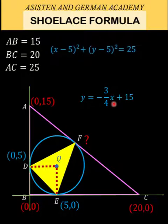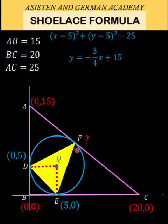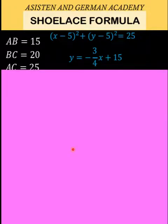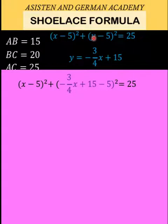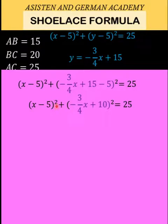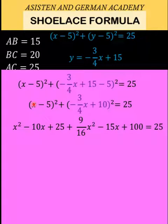We solve this system simultaneously using substitution. Substituting y = −(3/4)x + 15 into equation one, and simplifying (noting 15 − 5 = 10), we expand both squared binomials: (x − 5)² expands to x² − 10x + 25, and the other binomial expands similarly using the rule (first term)² − 2(first)(second) + (second)². This equals 25.